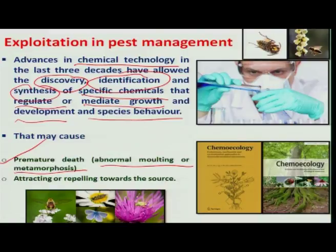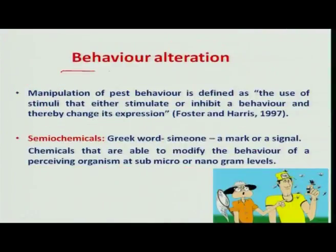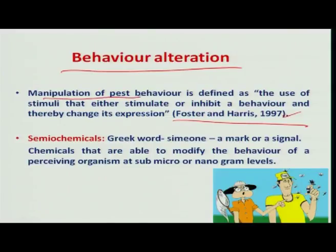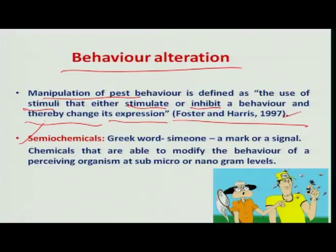At the same time, other chemicals are going to attract or repel insects toward a source. This behavioral alteration through chemicals was defined by scientists Foster and Harris in 1997 as: the manipulation of pest behavior is the use of stimuli that either stimulate or inhibit a behavior, thereby bringing about changes in the expression of insect behavior. Chemicals that change the behavior of insects are called semiochemicals.